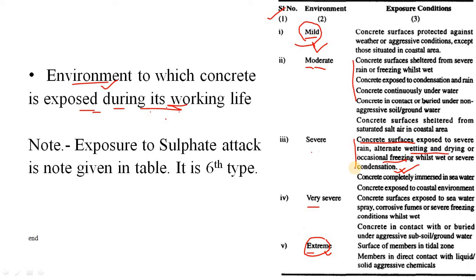If your concrete is in contact with aggressive chemicals, you have to choose a cement and design the mix in such a manner that the concrete is resistant to those chemicals. That is why exposure is so important to address during mix design. Additionally, while the table normally lists five types of exposure, there is a sixth type — exposure to sulphate — which is not in the main table. For sulphate exposure, there is a separate table in the IS code specifying which type of cement to use and the minimum cement content required.